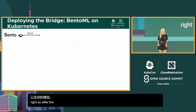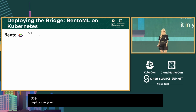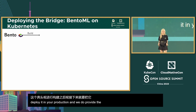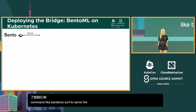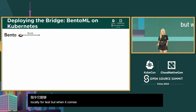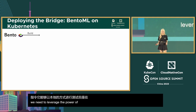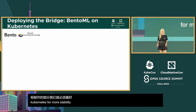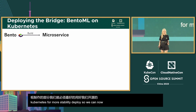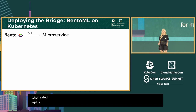After the Bento is built, we need to deploy it in production. We provide a command like `bento serve` to serve the Bento locally for testing. But when it comes to production, we need to leverage the power of cloud native and Kubernetes for a more stable deployment — deploying the Bento as a microservice.